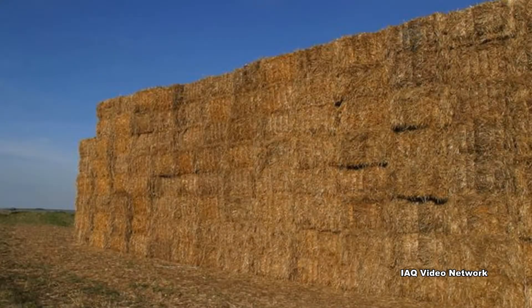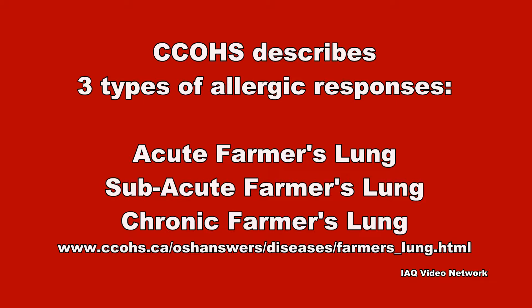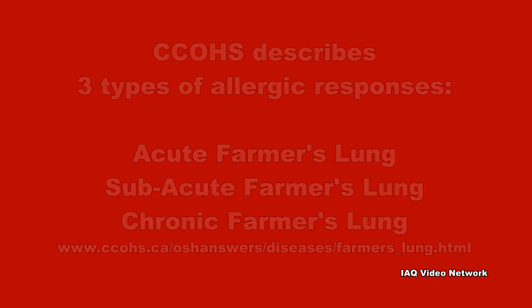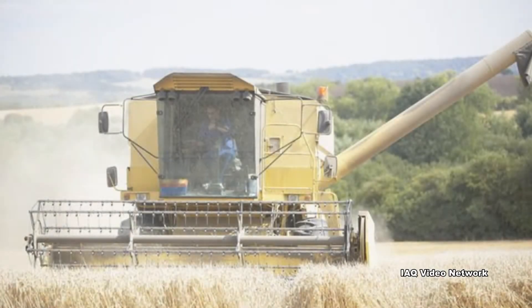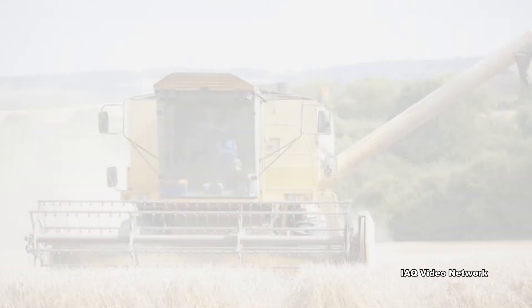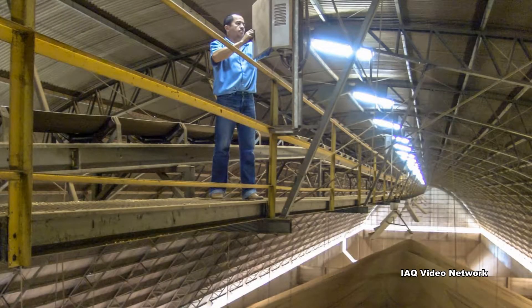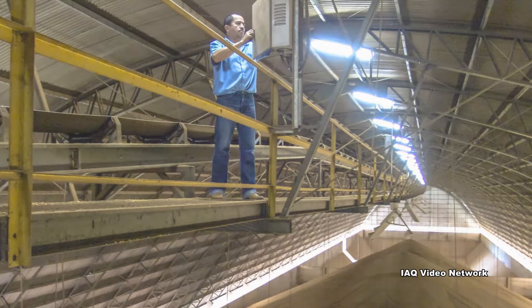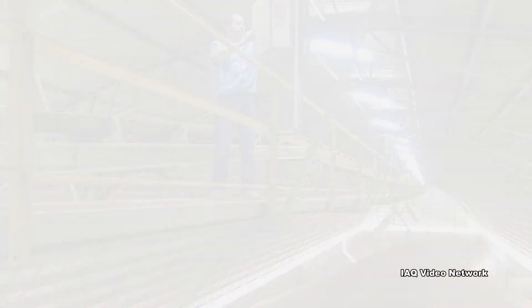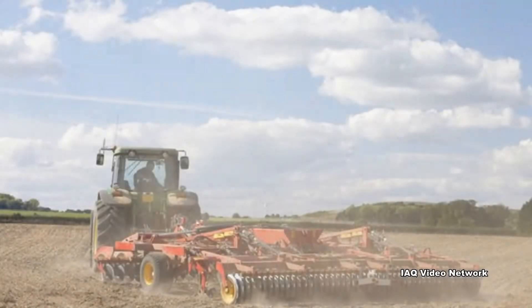There are three different types of allergic responses described by the Canadian Center for Occupational Health and Safety for farmer's lung, including acute, subacute, and chronic. The agency also reports that the signs and symptoms vary tremendously, and the allergic response depends on the sensitivity of the individual and the amount of moldy dust entering the lungs. The reaction can be a sudden attack or symptoms associated with a slow progressive illness.